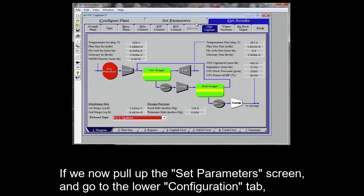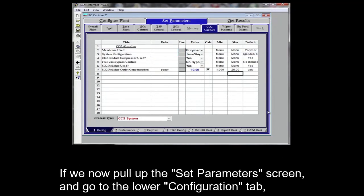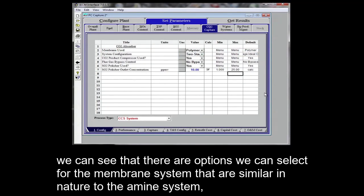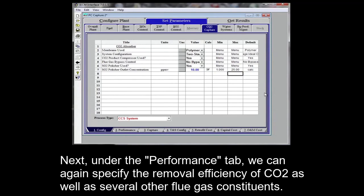If we now pull up the set parameters screen and go to the lower configuration tab, we can see that there are options we can select for the membrane system that are similar in nature to the amine system, including the option to bypass a fraction of the flue gas past the membrane capture system.